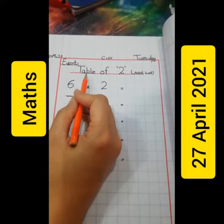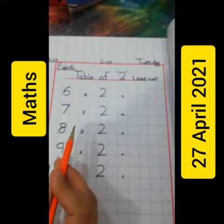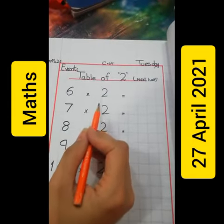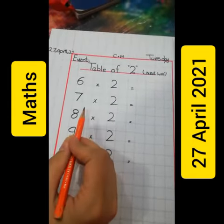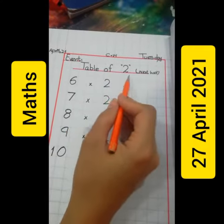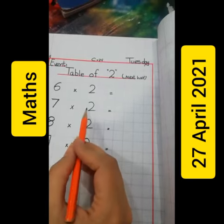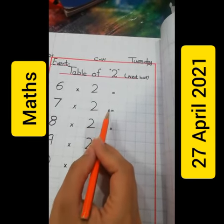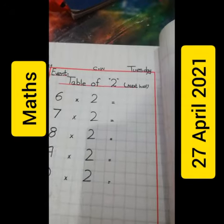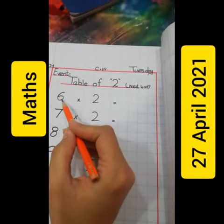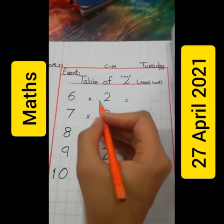Today's maths topic is table of two, next half. We did the first half of table of two in our previous lecture. Now today we will write the next half of table of two. As you know, you can do the table of two with the help of sum of addition as well as jump of two. Today we have to do the table of two from six to ten. Now let's start with me.